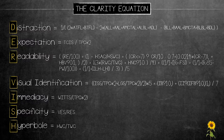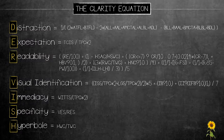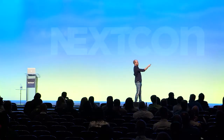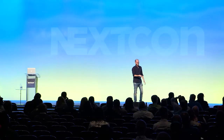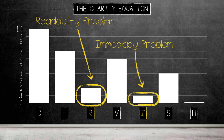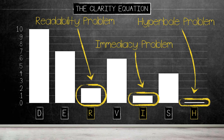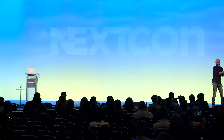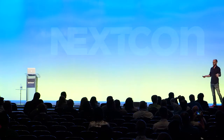That moves into this kind of chart, and I have an interactive calculator on that page that walks you through how to score yourself. Now I know I have a readability, immediacy, and hype problem — so I know where to focus my efforts instead of wasting time on things that don't matter.